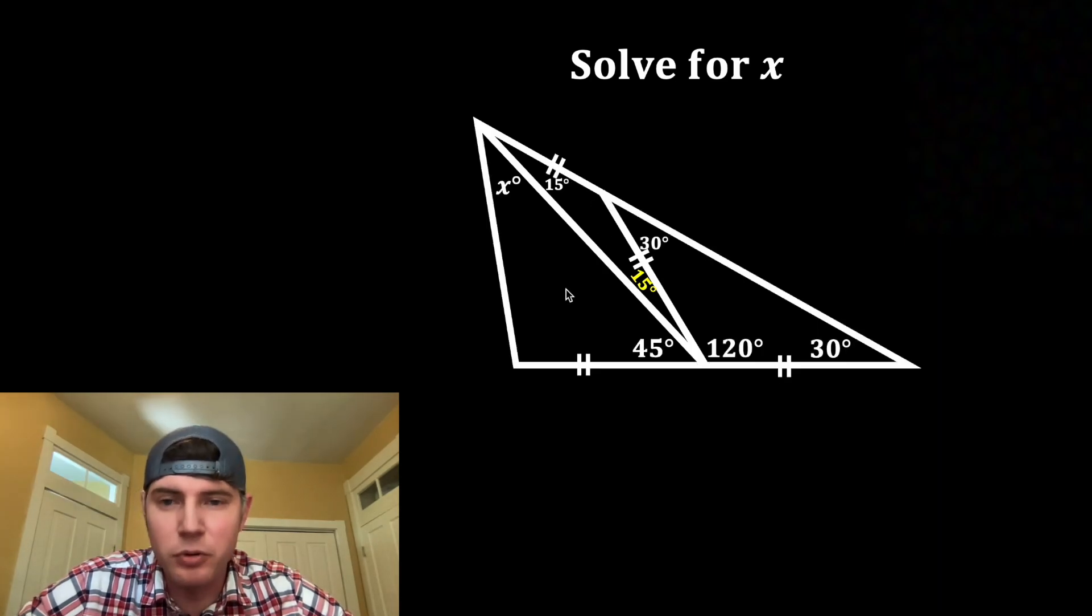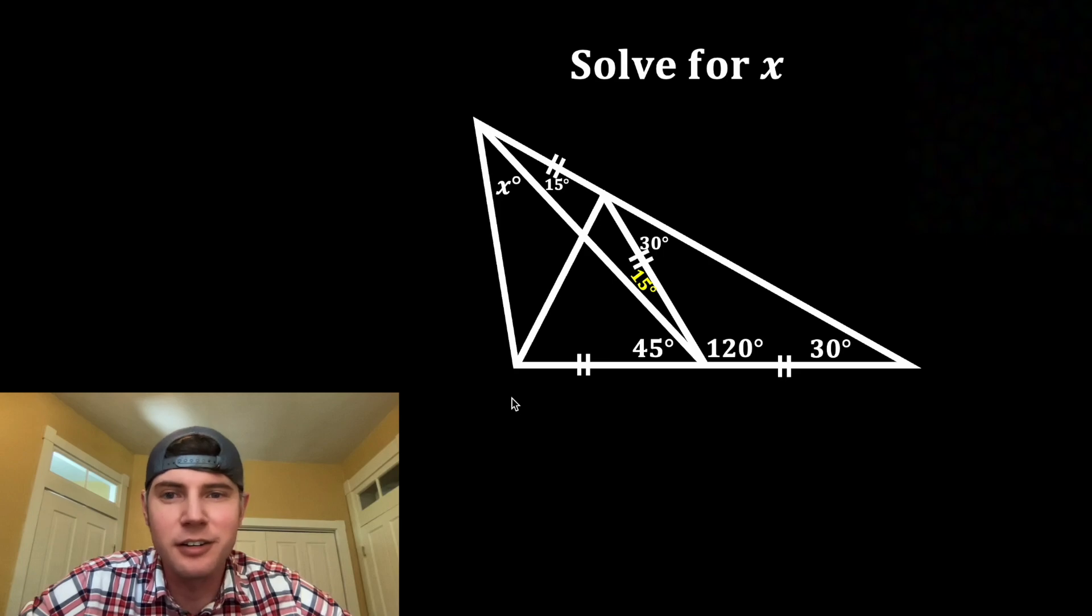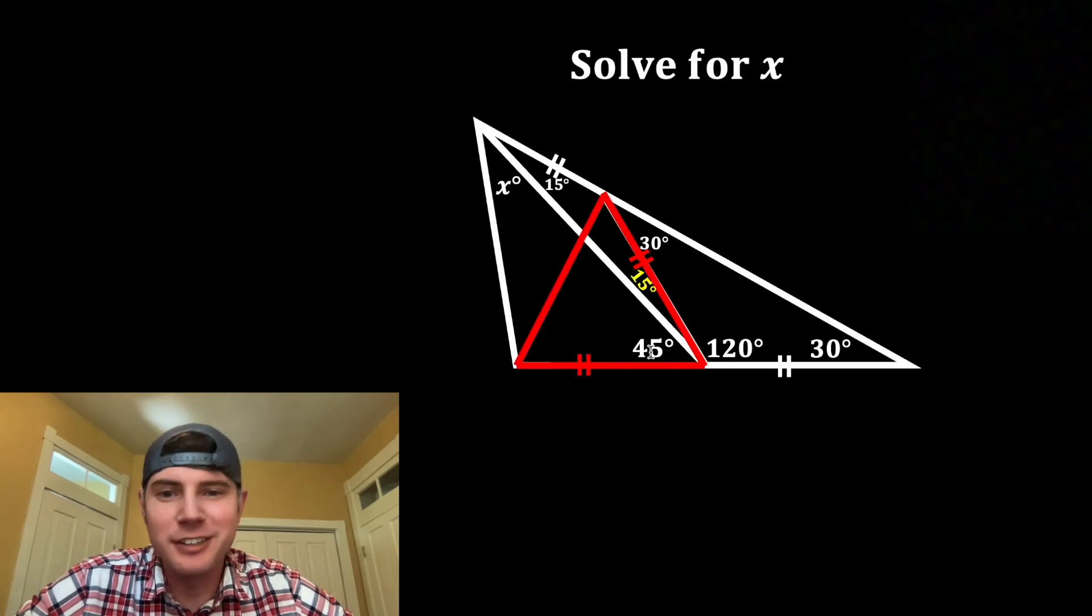Next, let's connect this intersection point with this vertex right here. And let's focus on our new triangle. To find this angle down here, we need to add the 15 degrees and the 45 degrees to get 60 degrees.